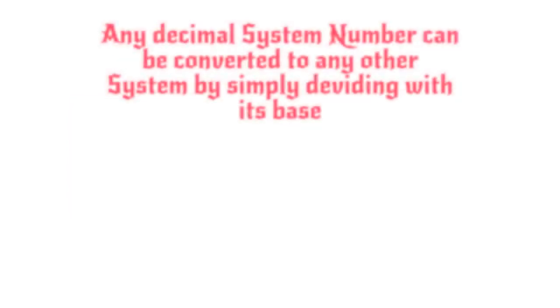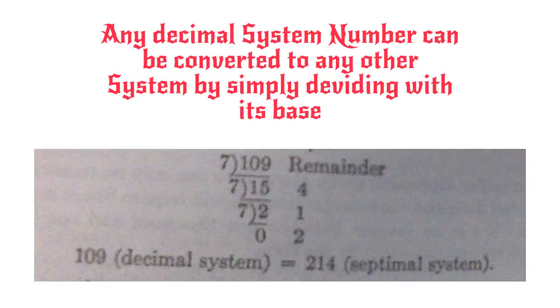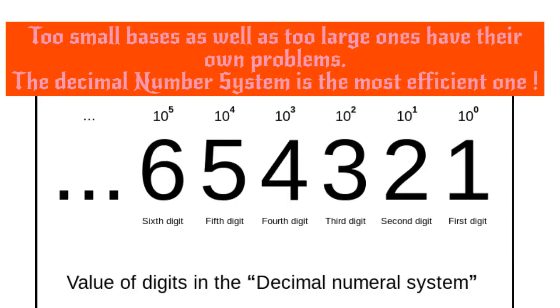It is a simple exercise to show that any decimal system number can be converted to any other system by simply dividing with the base and collecting the remainders. For example, 109 in base 10 can be converted to the septimal system in the following way. It turns out, as you can see, that 109 in decimal system is 214 in the septimal system.